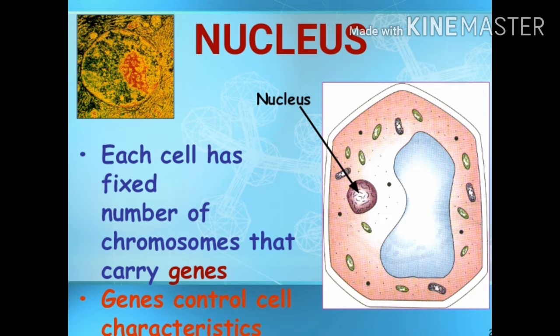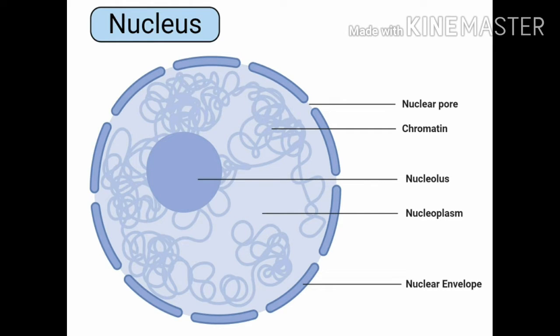Nucleus. Nucleus is a spherical body present inside the cell. It is also called as the brain of the cell. It contains a thick jelly-like substance called nucleoplasm. The nucleus is separated from the rest of the cell by a nuclear membrane.